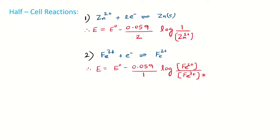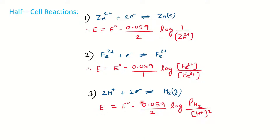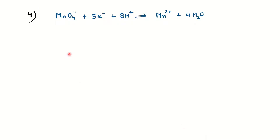In this example, H⁺ is gaining electrons and reducing into hydrogen gas H₂. To calculate the reduction potential E, the number of electrons is 2. Since we are dealing with a gas, the potential is also dependent on the partial pressure of hydrogen gas (pH₂ in atmospheres). So we write: log of pH₂ divided by [H⁺]² (concentration of H⁺ raised to its stoichiometry of 2).